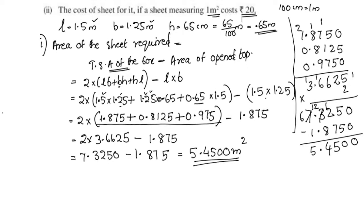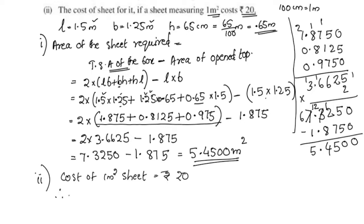Second question: The cost of 1 square meter of sheet is Rs. 20. Therefore, the cost of 5.45 square meters of sheet is equal to 5.45 multiplied by 20, which equals Rs. 109.